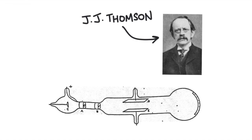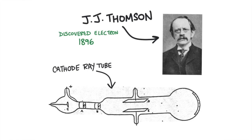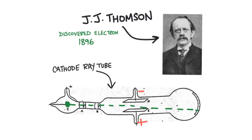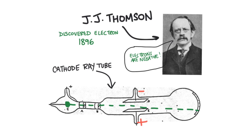J.J. Thomson is credited with the discovery of the electron in 1896. Thomson used a cathode ray tube, which was a device that heated a filament until it released a beam of particles. Thomson placed a positively charged plate on one side of the particle stream and a negatively charged plate on the other side. The particles were attracted to the positively charged plate, which led Thomson to conclude that the particles were negatively charged.